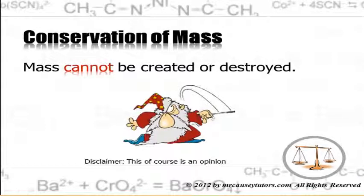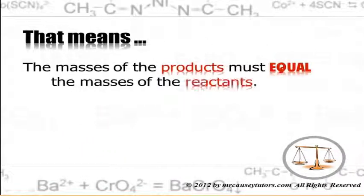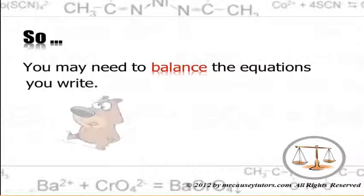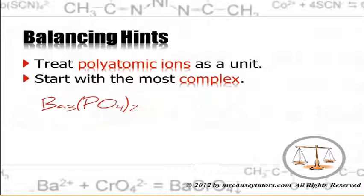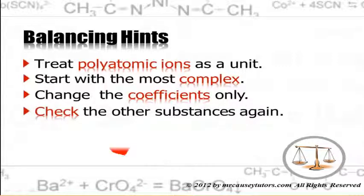Conservation of mass: mass cannot be created or destroyed — it can only be changed from one form to another. The masses of the products must equal the masses of the reactants. Balancing hints: treat polyatomic ions as a unit, start with the most complex molecule, change coefficients only (not subscripts), and check all substances every time you make a change.